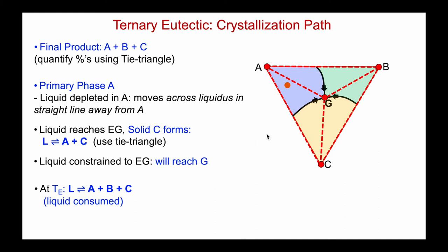When I reach the ternary eutectic, I'll use my construct shown in red to denote the liquid is now in equilibrium with — since I'm cooling — forming more A, more C, and now some B. I'll stay at that temperature until the liquid is consumed, undergoing this ternary eutectic reaction. And then I'm done.